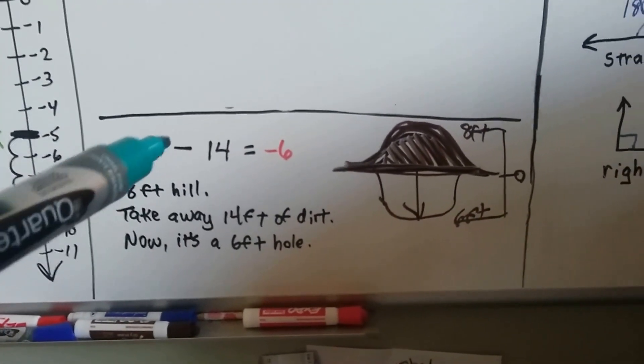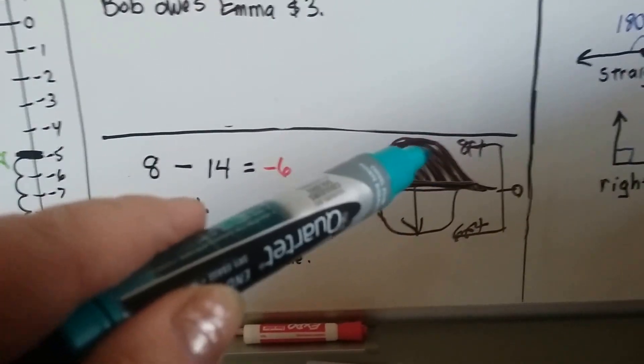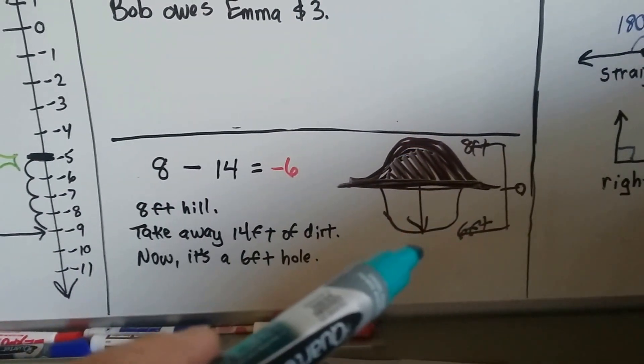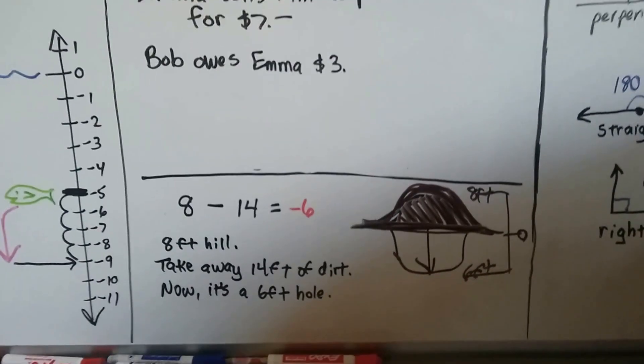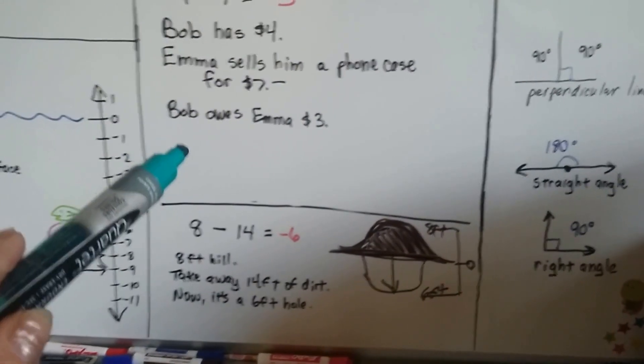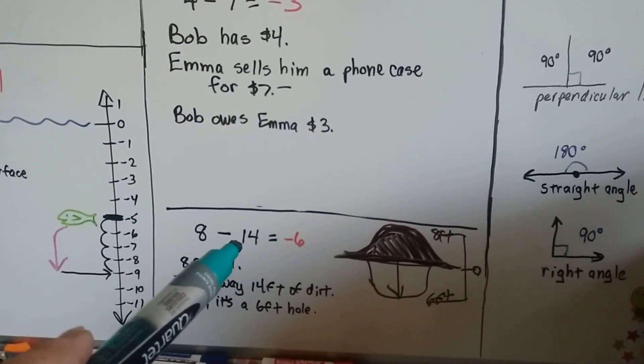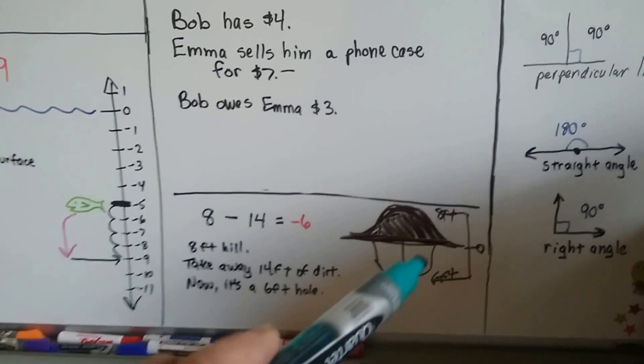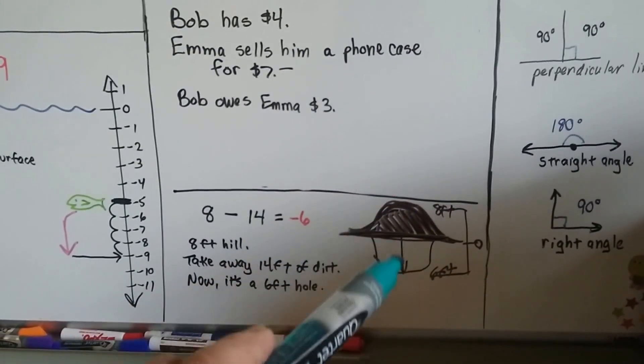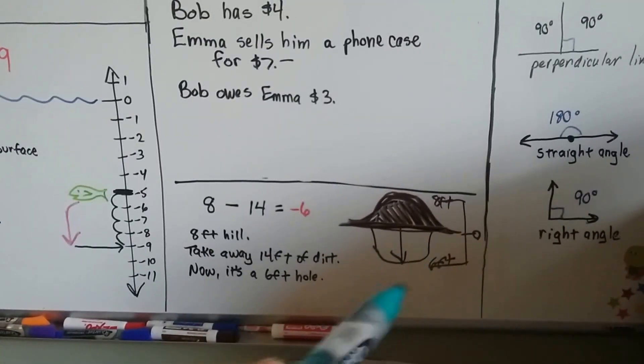So now we'll do our little hills and hole thing. We have an 8-foot hill and we're going to take away 14 feet of dirt. If we have an 8-foot hill and we take away 14 feet of dirt, it's going to put us 6 feet into the ground. We'll have a 6-foot hole, wouldn't we? If Bob had $8 and he bought something from Emma for 14, he would give her the money he had, but he'd still owe her 6. And it's just like having an 8-foot hill but digging down 14 feet. You've dug away all of the hill and you kept going and made a 6-foot hole.